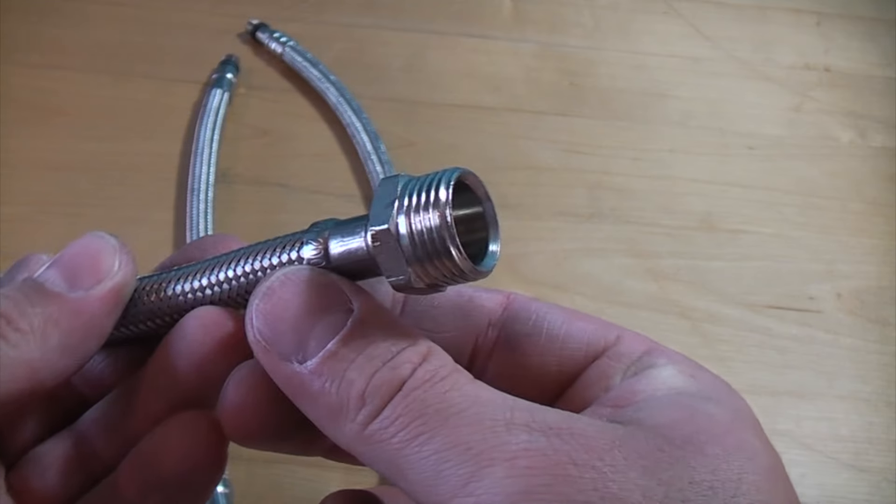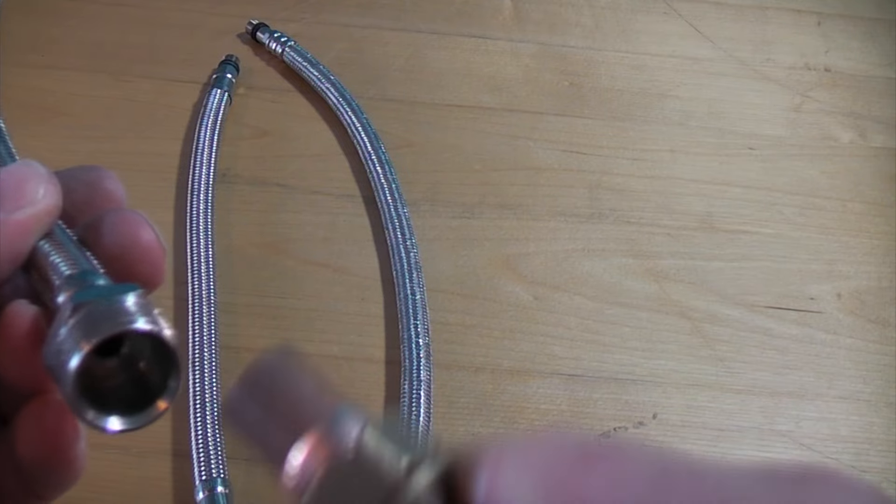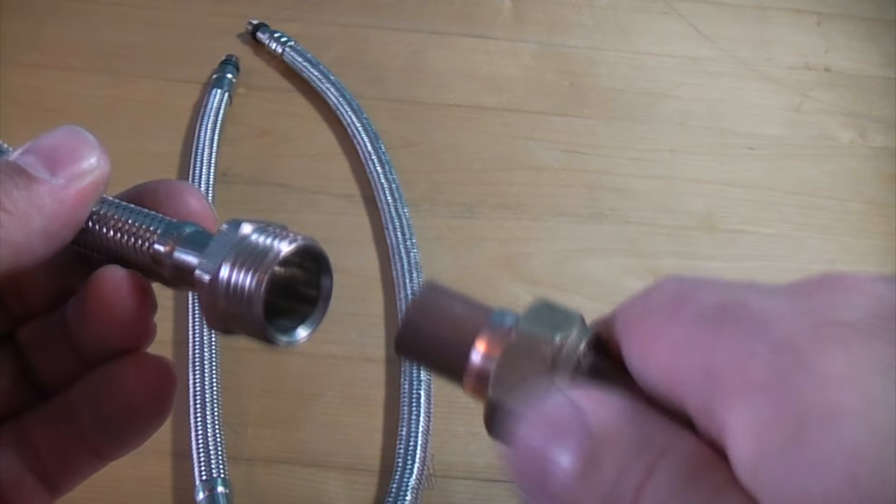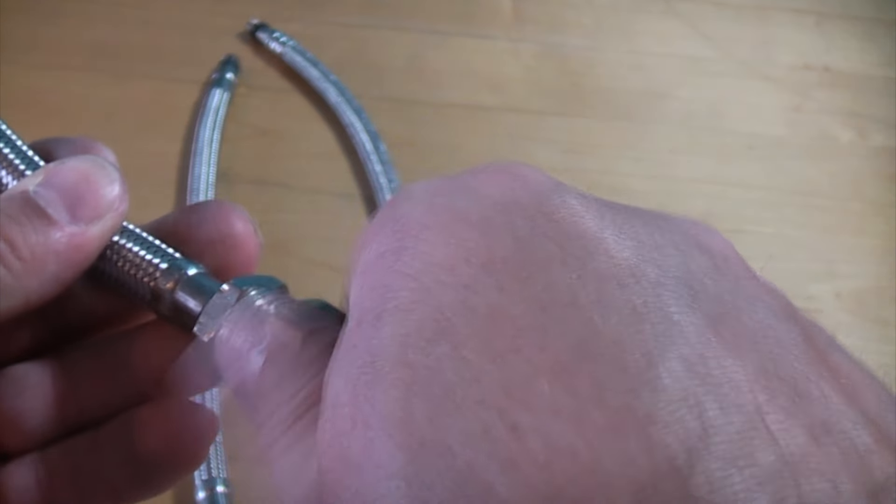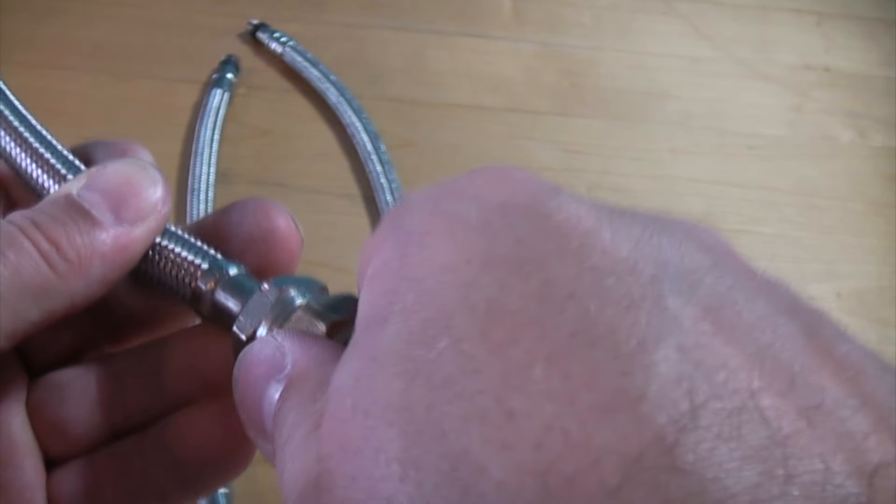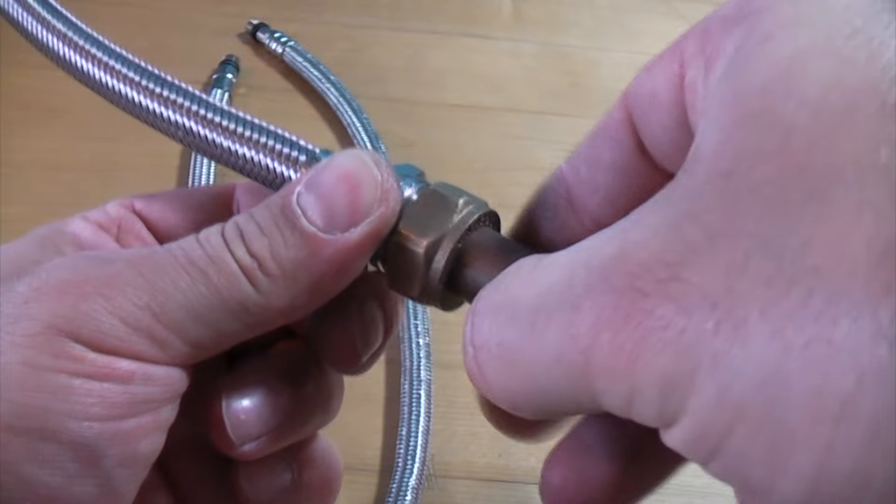If your flexi tail's threaded like that, then all you need to connect that up is a compression nut and an olive like that. And then you just tighten that up as you would do if you were doing a compression fitting with two pairs of adjustables, and make sure it's tight and then it can't leak.